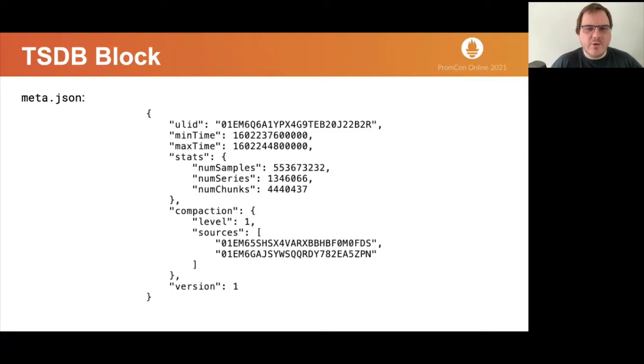This is what the meta JSON file looks like. It contains some information about the block, most importantly, the time range that it covers, but also some stats and information about compaction.